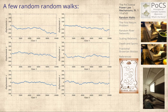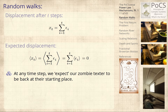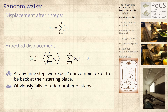There's a little detail about even and odd numbers: you have to have an even number of steps to get back to the origin. With an odd number of steps, you can only be plus or minus one from the origin. So that's a little detail — it will matter technically. We expect our zombie texter to remain near the origin on average.